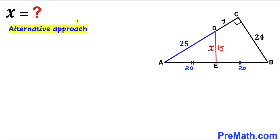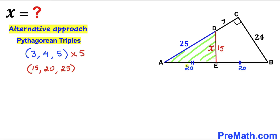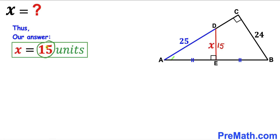Now let me show an alternative approach using Pythagorean triplets applied to right triangle AED. The triplet 3, 4, 5 multiplied by 5 gives 15, 20, 25. Since we already know the legs AE = 20 and hypotenuse AD = 25, the remaining side DE must be 15. So the X value is confirmed to be 15 units.